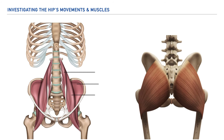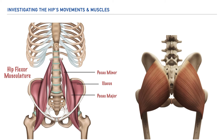Moving toward the anterior portion of the pelvis, we'll find a group of muscles collectively called the hip flexor muscles. This includes the psoas minor, the iliacus, and the psoas major muscles. And on the posterior aspect of the pelvis we have the large gluteus maximus muscle.